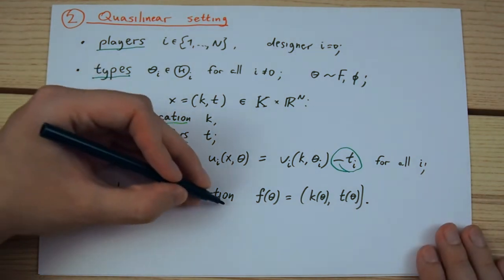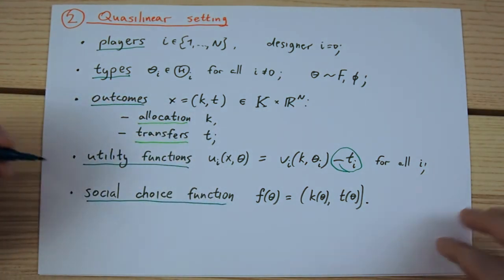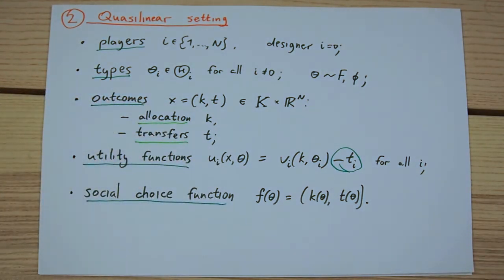Finally, a social choice function must, as before, select an outcome given any type profile. In this setting, this means selecting an allocation according to some allocation rule and a vector of transfers according to some transfer rule.